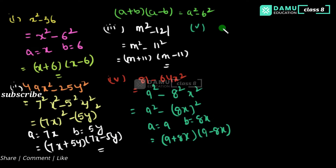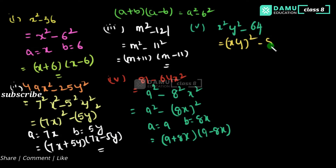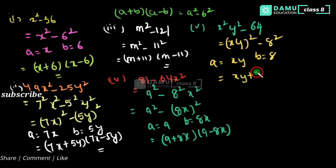The fifth one is x squared y squared minus 64. You can write xy whole squared minus 8 squared. So a equals xy and b equals 8. Therefore the factorization is xy plus 8 into xy minus 8.